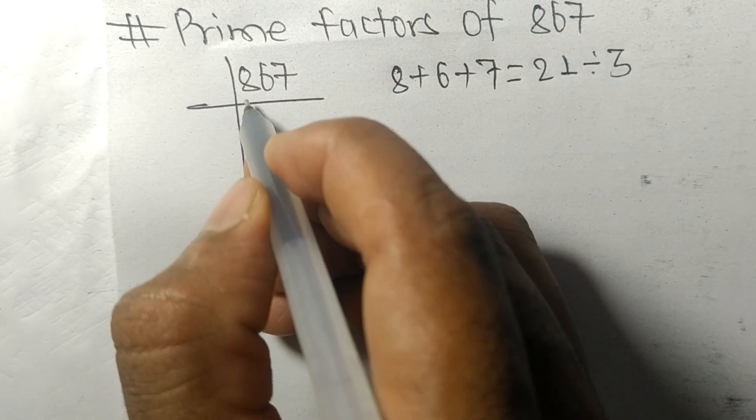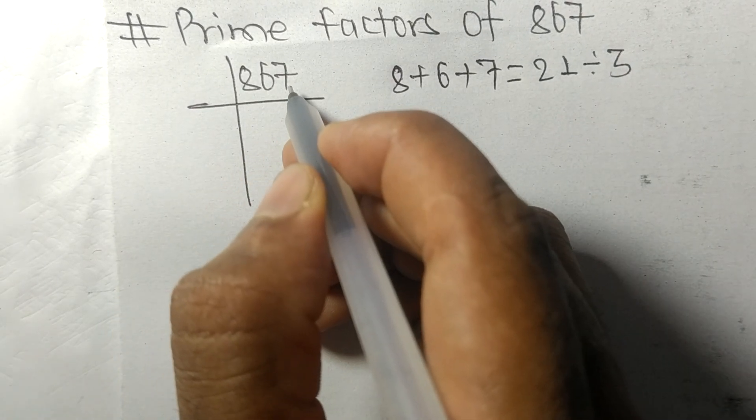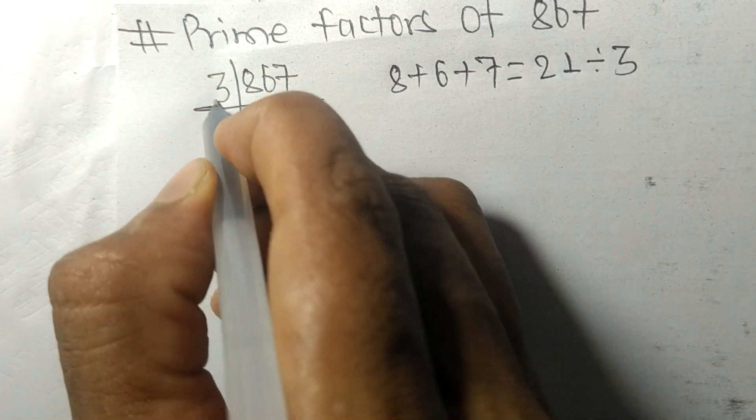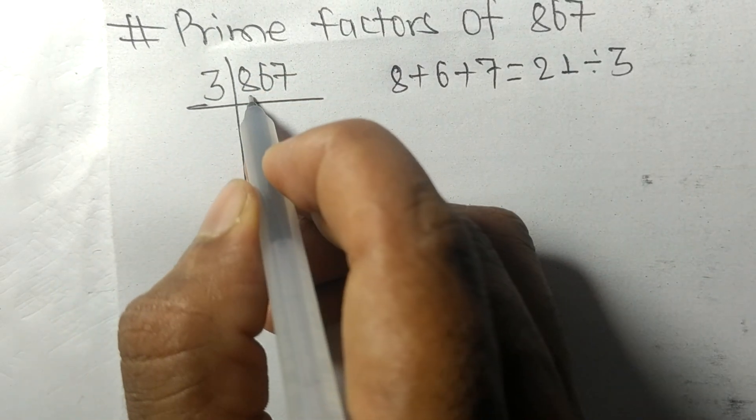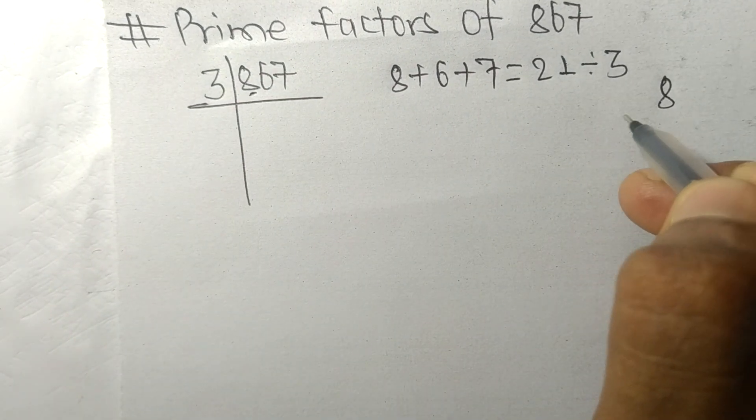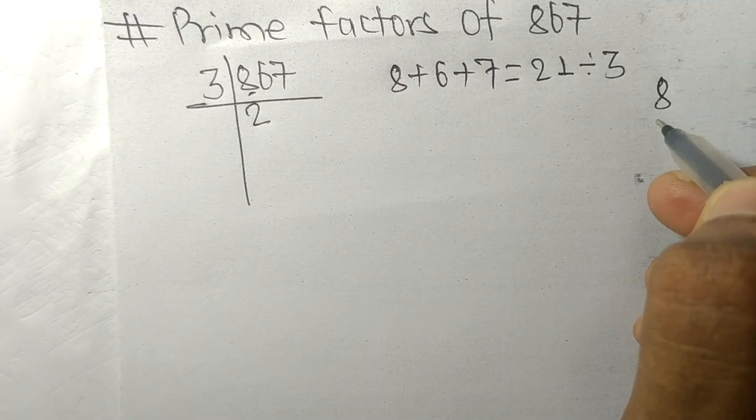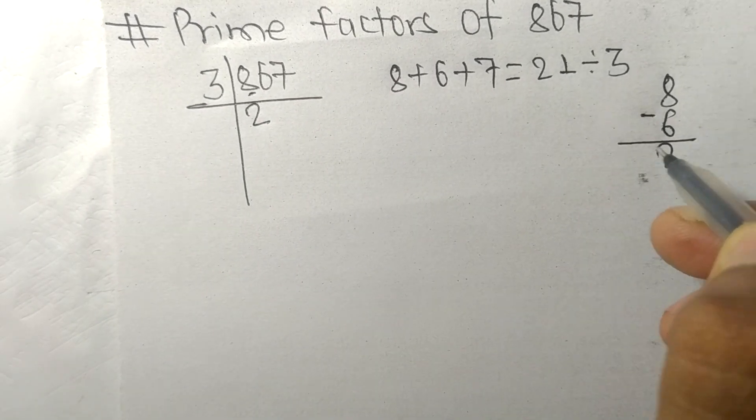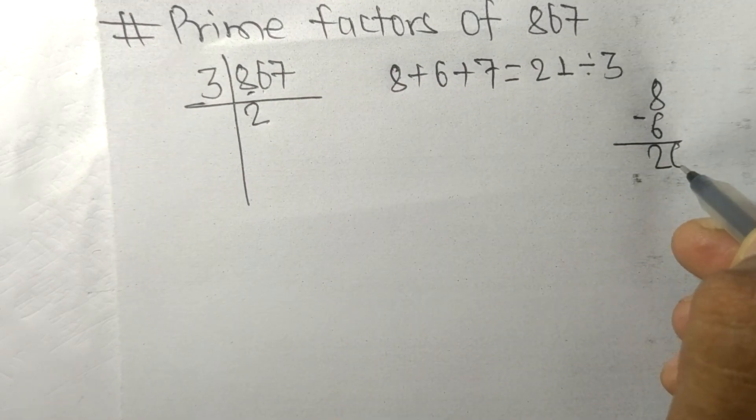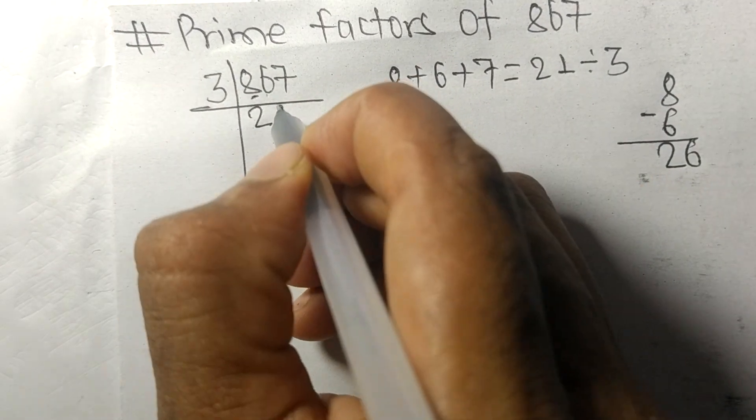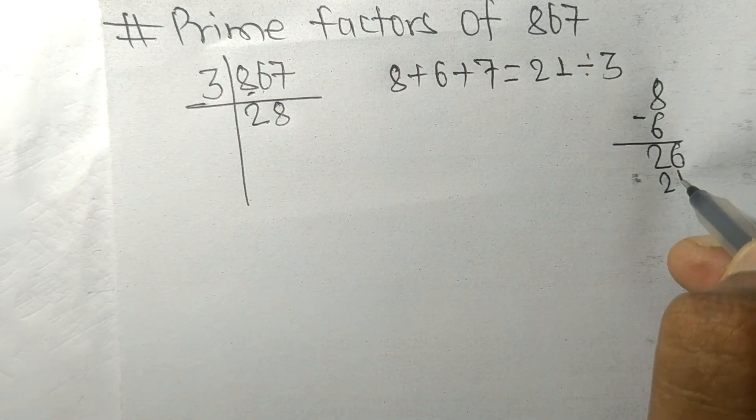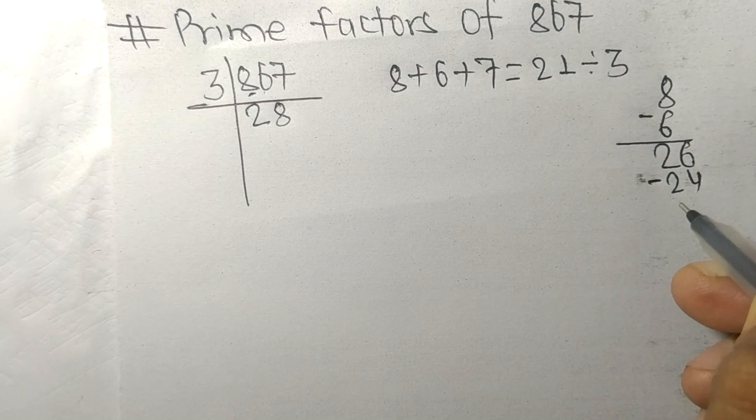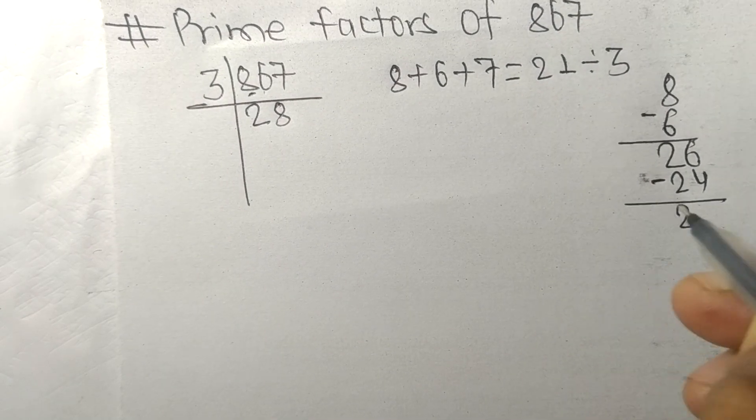So 867 is also divisible by 3. First we have 8, so 3 times 2 is 6, on subtracting we get 2, and this 6 becomes 26. So 3 times 8 is 24, on subtracting we get 2, and this 7 becomes 27. 3 times 9 is 27.